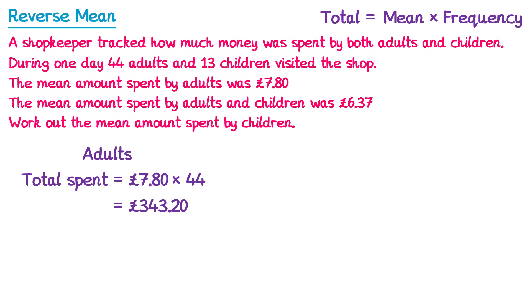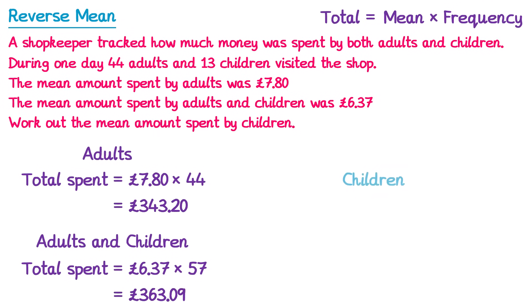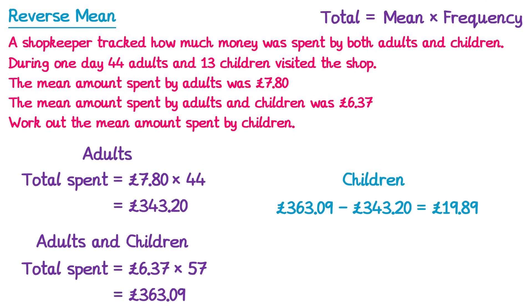We can't do this directly for children, but we can do it for adults and children combined. The mean spent by all was £6.37, so we take £6.37 and multiply it by the total number of people — 44 adults plus 13 children is 57. So we multiply by 57, which gives a total spent of £363.09. To work out the amount children spent in total, we subtract the amount spent by adults: £363.09 minus £343.20 gives £19.89.